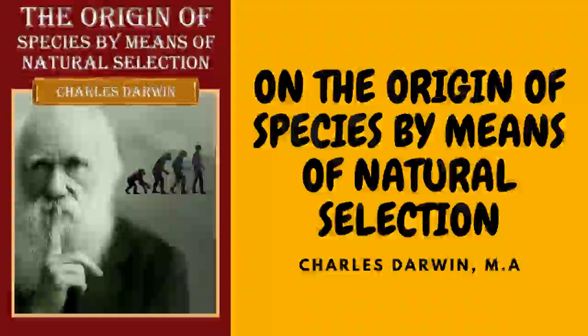Thus the inherited peculiarities in the horns of cattle could appear only in the offspring when nearly mature; peculiarities in the silkworm are known to appear at the corresponding caterpillar or cocoon stage. But hereditary diseases and some other facts make me believe that the rule has a wider extension, and that when there is no apparent reason why a peculiarity should appear at any particular age, yet that it does tend to appear in the offspring at the same period at which it first appeared in the parent. I believe this rule to be of the highest importance in explaining the laws of embryology.